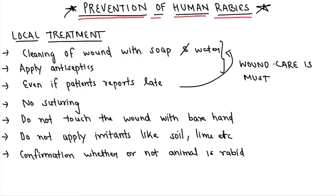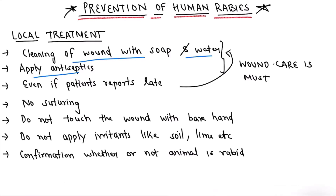Starting with the local treatment — what we should do if an animal or a dog bites you. The first step is cleaning of the wound with soap and water and applying some antiseptics. Wound care is very important in the context of rabies, and even if a patient reports late, we should still do the wound care because the rabies virus stays on the skin for a long time.